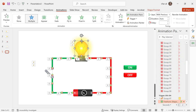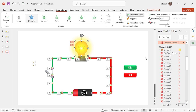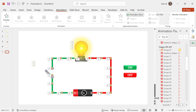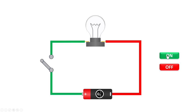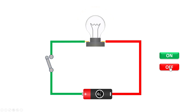Now let's see it on the big screen. At the start of the presentation, you can see there are no electrons and no bulb glowing. Whenever I click the On button, you can see how smoothly the switch connects, the electron motion starts, and the bulb turns on. Now I click Off — you can see all electrons disappear. That's how you can make this beautiful animation in your slide.